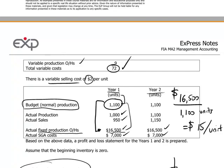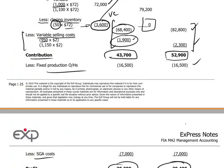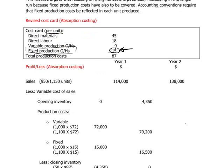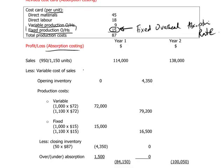On a normalized basis, it's presumed that if we produce 1,100 units, we will completely absorb the $16,500 worth of fixed production overheads. That number — the fixed overhead absorption rate of $15 per unit — is defined in the cost card, and this is how it's used when we do the profit and loss calculation according to the absorption costing method.